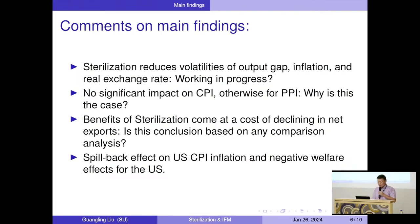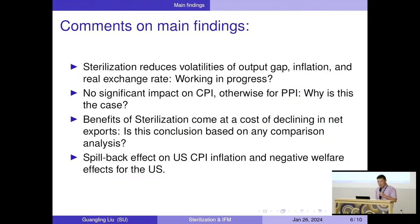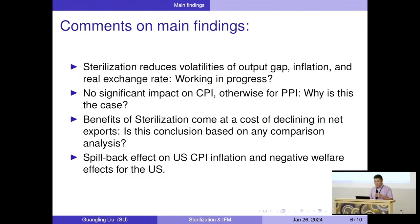The benefit of exchange rate intervention comes at the cost of declining net exports — but I'd ask why this is considered a cost. If you have sterilization, your domestic currency won't depreciate as much. Regarding spillback effects on U.S. CPI inflation and negative welfare effects for the U.S. — we have to look at this more carefully. The conventional view is that you would not expect anything from a small economy to have a significant impact on the U.S. economy.